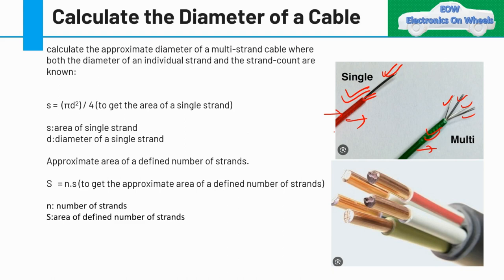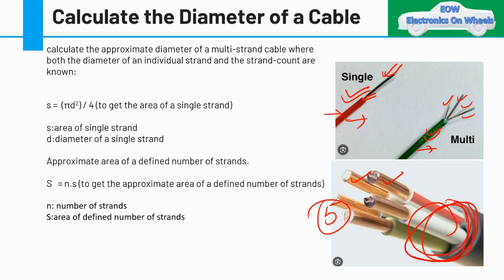First we'll cover the theory, then go to a practical example. We start with the area of a single strand. The formula is the standard one from academics: area of a single strand = π d² / 4, where 's' (lowercase) is the area of the single strand and 'd' is the diameter of the single strand.